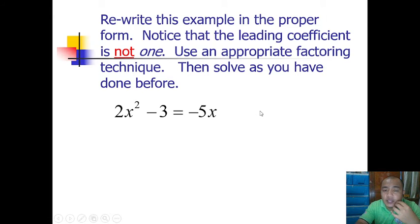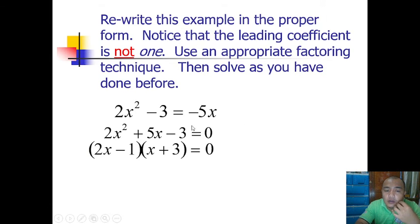2x²-3=-5x. Transpose to get 2x²+5x-3=0. This can be done by trial and error: (2x-1)(x+3). Check: 2x times x is 2x².